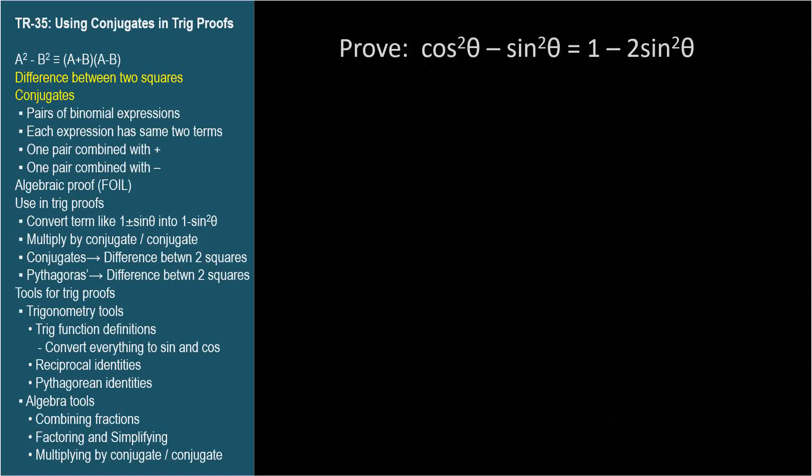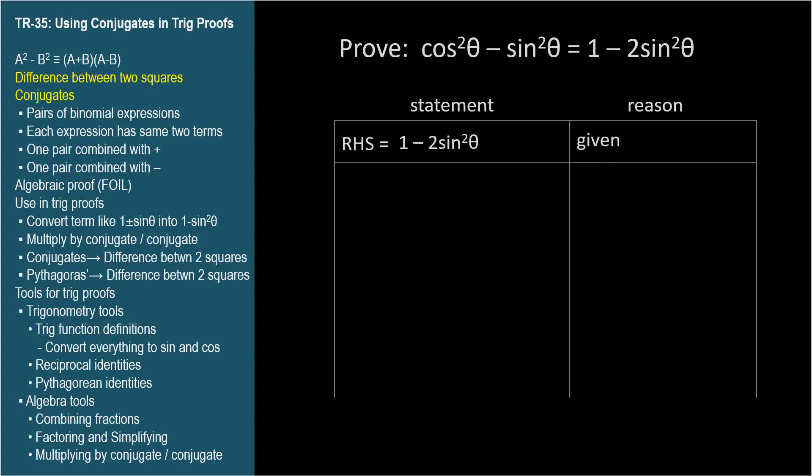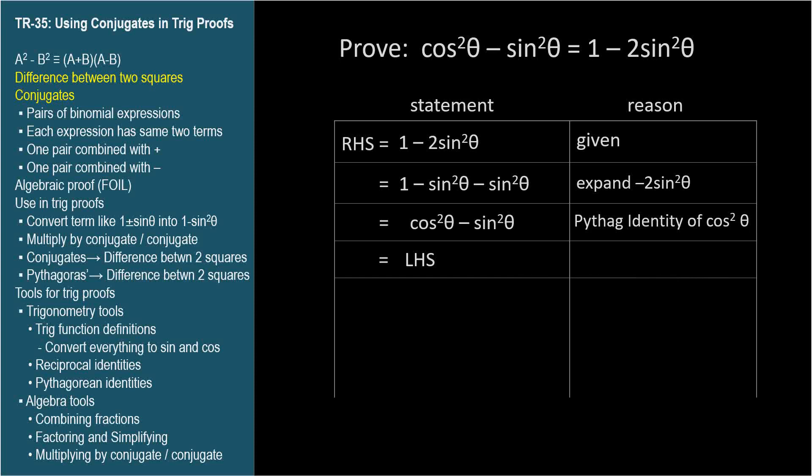Here's a simple proof to illustrate how important it is to remember algebra. Prove cosine squared theta minus sine squared theta equals 1 minus 2 sine squared theta. Well, 2 sine squared theta doesn't look like anything we've encountered before. We don't have any identities that include 2 sine anything. Let's consider that subtracting 2 sine squared theta is the same thing as subtracting sine squared theta twice. So the right-hand side can be rewritten as 1 minus sine squared theta minus sine squared theta. We can collect the 1 minus sine squared theta and replace it with cosine squared theta by Pythagorean substitution, thus yielding the left-hand side. So don't forget your algebra just because we're studying trigonometry.